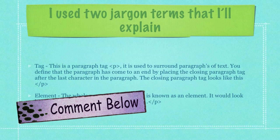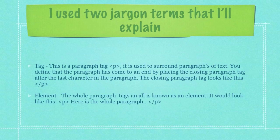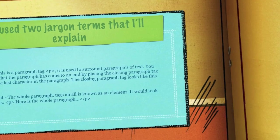This is a paragraph tag. It is used to surround paragraphs of text. You define that a paragraph has come to an end by placing the closing paragraph tag after the last character in the paragraph. The closing paragraph tag looks like this. In regards to an element, the whole paragraph — tags and all — is known as an element. It would look like this, with an opening paragraph tag which encloses all of the words that go into the paragraph, and a closing paragraph tag.